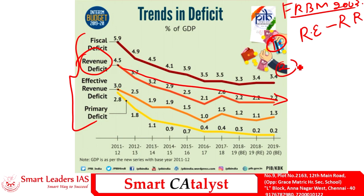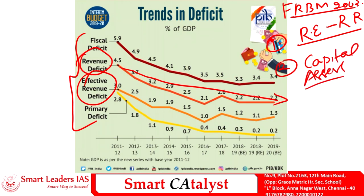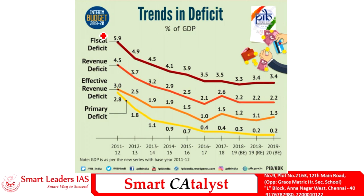The second deficit is the effective revenue deficit. Not all components of revenue deficit are utilized before creating long-term capital assets, and creating long-term capital assets is very much essential for economic health. If you exclude expenditure that goes towards creating long-term capital assets from the revenue deficit, the result is called the effective revenue deficit.